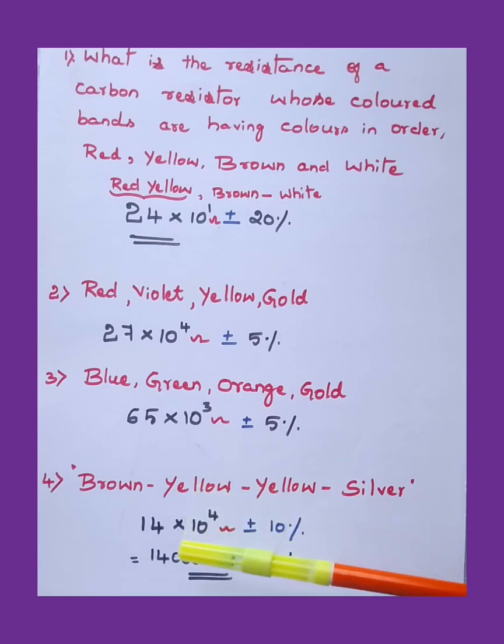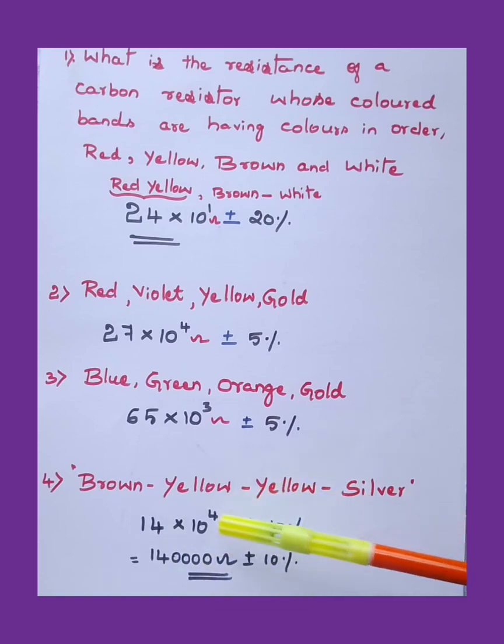If it is brown, yellow, yellow, silver: for brown the value is 1, and for yellow it is 4. So 14 into 10 to the power of 4, again yellow, ± 10 percentage for silver. Silver is the tolerance given. Sometime the answer will be given like this also, multiplied and together given. If the answer is this type, you can choose this answer also, no problem.